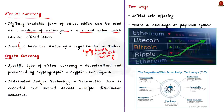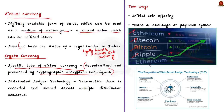Cryptocurrency is a specific type of virtual currency which is decentralized and protected by cryptographic encryption techniques. Bitcoin, Ethereum, and Ripple are a few notable examples. Decentralization implies there is no central authority where records of transactions are maintained; instead, anyone can create a transaction and this data is recorded and shared across multiple distributed networks through independent computers. This technology is known as Distributed Ledger Technology.